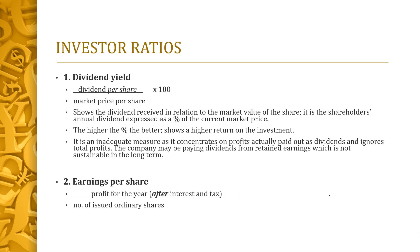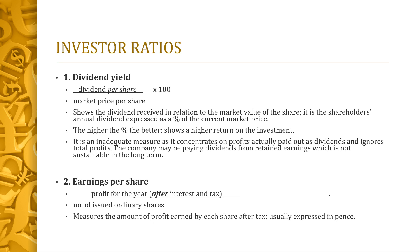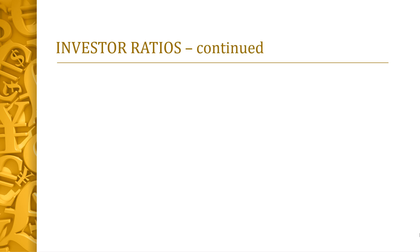The second one is earnings per share. That's the profit for the year after interest and tax — the figure that goes on to your statement of changes in equity — divided by the number of issued ordinary shares. Be careful: it's the number of shares, not the monetary value. So if you've got a million pounds worth of 10 pence shares, you've got 10 million shares. This measures the amount of profit earned by each share after tax, usually expressed in pence.